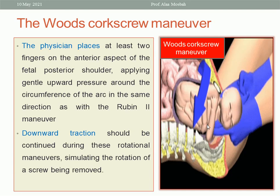If that fails, go to the Woods Screw maneuver as shown in this picture. With two fingers in the vagina on the anterior surface of the posterior shoulder, and two other fingers on the back of the anterior shoulder, try to rotate the shoulder girdle 180 degrees in the direction of the arrow, while doing gentle traction on the head. At any moment, the shoulder girdle may enter a diameter through which it can pass the pelvic inlet. Downward traction should be continued during this rotational maneuver, simulating the rotation of a screw being removed.